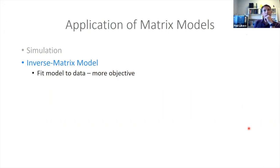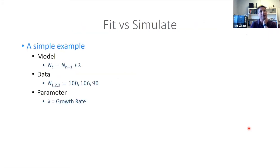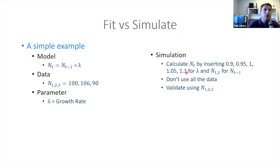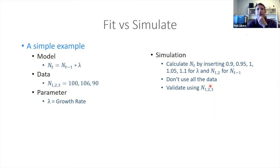Let's think a bit more about the application of our matrix models and the idea of inverse model fitting — fitting our model to data more objectively. A simple example: if we just had a model where last year's population size times a growth rate equals next year's population, and we have three observations of population size and want to estimate the growth rate, we could insert the three population sizes and estimate each year's growth rate. But that's not really using all the data at the same time — it's an inefficient way to go about it.